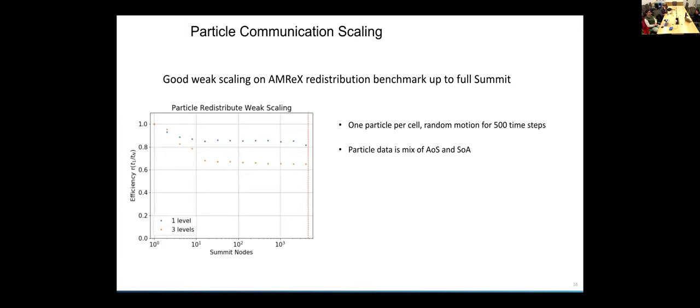These are some scaling results for our particle communication routines. This was done on Summit, but it's a problem where we essentially make up a bunch of particles and move them around randomly and then put them back in the right place after every time step. We have both runs where we had no mesh refinement and then runs where we have mesh refinement. The red dotted line here is the number of nodes that's like the full Summit system. We actually see pretty good weak scaling after we've saturated the amount of communication work we're doing. The weak scaling is pretty flat going up to the full size of the Summit system. This particular benchmark used one particle per cell, moving randomly for 500 time steps, with particle data that is a mix of array of struct and struct of array.